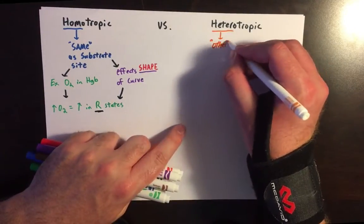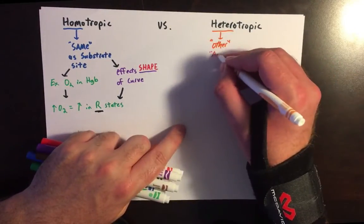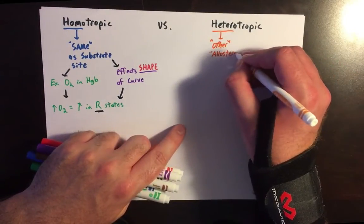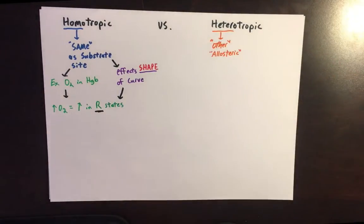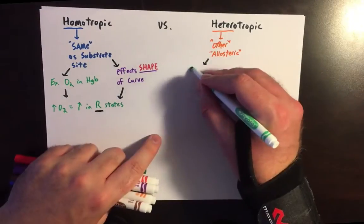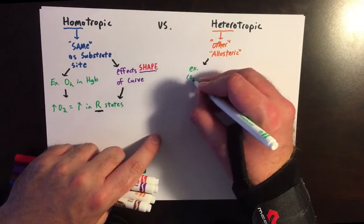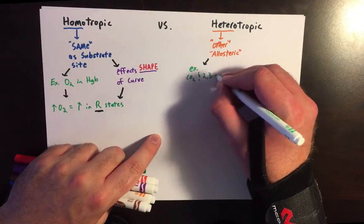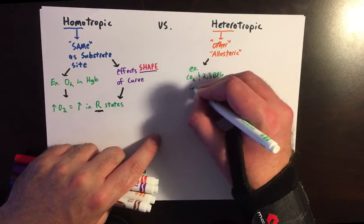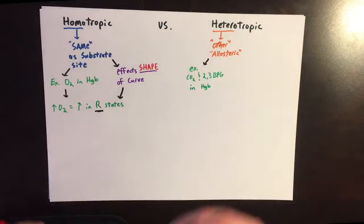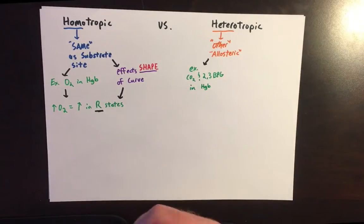Heterotrophic — as the word hetero means — refers to other or allosteric effectors. 2,3-BPG or CO2 binding in hemoglobin would be examples of heterotrophic effectors.